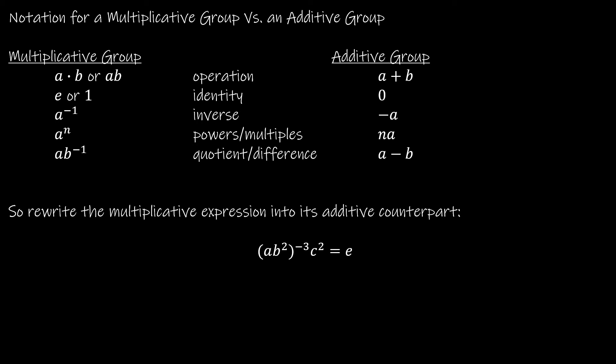That's all the proofs for this section. We also want to talk about notation for a multiplicative group versus an additive group. A multiplicative group uses multiplication notation, while an additive group uses addition. The identity for a multiplicative group is written E or 1, whereas for an additive group it's 0 — if you add 0 to something, you end up back where you started. For inverses, A inverse in multiplicative notation means 1 over A, since A times 1/A returns you to the identity 1.